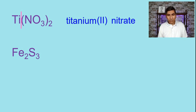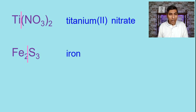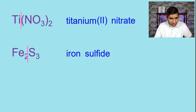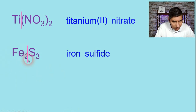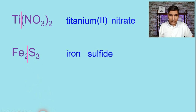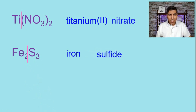Let's try Fe2S3. Split this down the middle. Fe is the symbol for iron, and S is the symbol for sulfide. Iron is a transition metal, so we need to state the charge in Roman numerals. We unswap the charges — the subscript 2 shown is the charge of sulfide, so the charge on iron has to be 3. The formula is Fe2S3, the name is iron(III) sulfide.